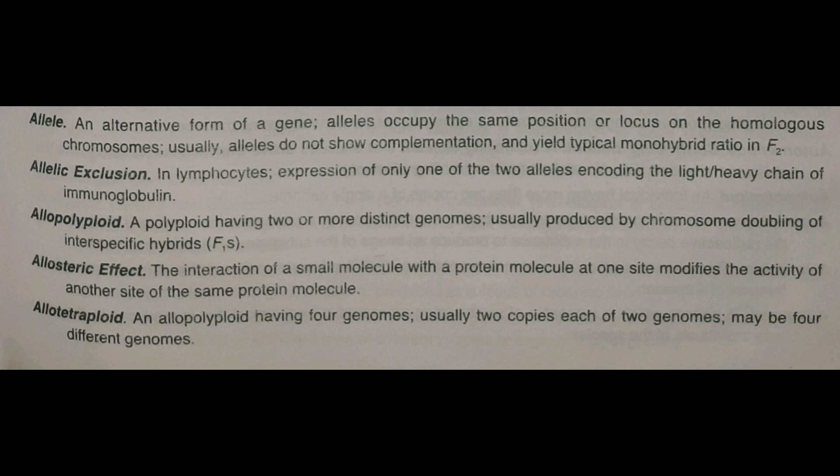Next one is alloploidy. Ploidy kya hota hai - jab distinct genomes hote hain, autoploidy hota hai, alloploidy hota hai. Alloploidy mein do ya do se zyada distinct genomes alag-alag hote hain. Yeh usually produced by chromosome doubling of inter-specific hybrid F1s.